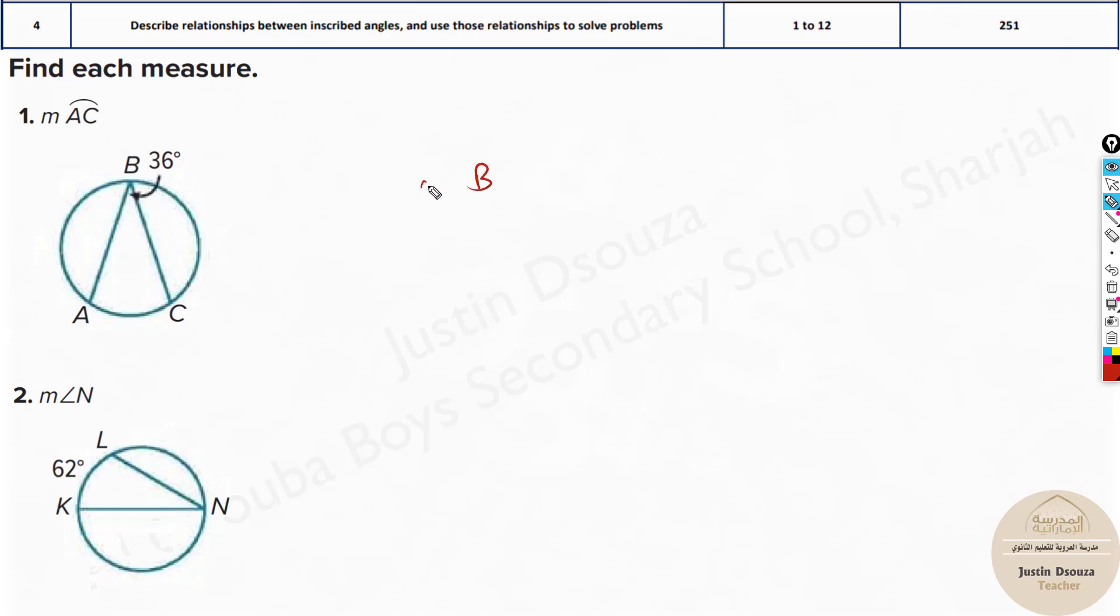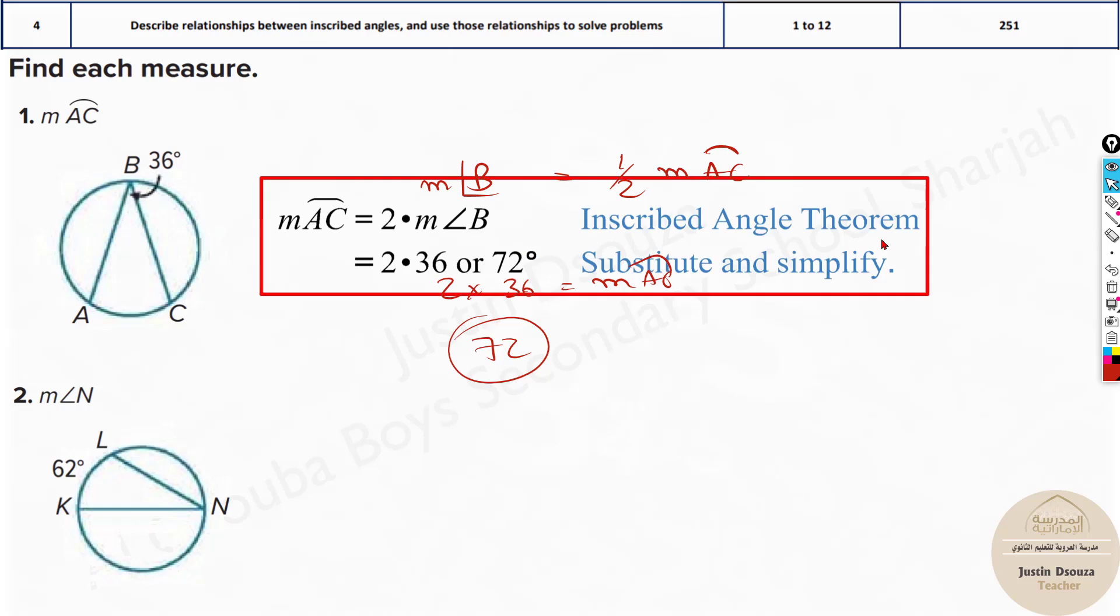So I will write the measure of angle B equals half of the measure of arc AC. And now we need to find arc AC. Take this 2 to the other side. It will be 2 times the measure of angle B, that is 36. So the measure of arc AC, we get 72 degrees. That would be the answer.